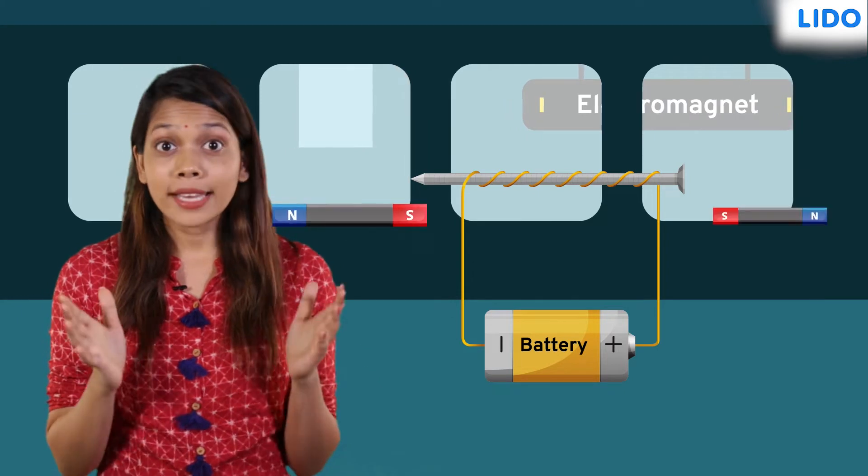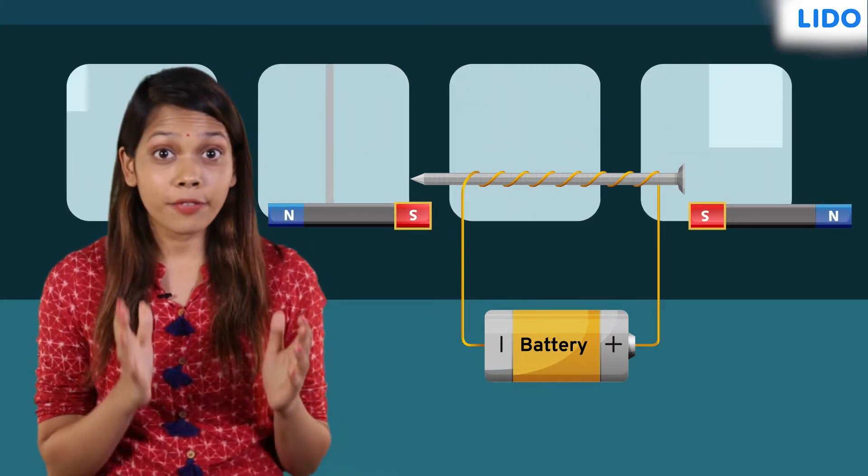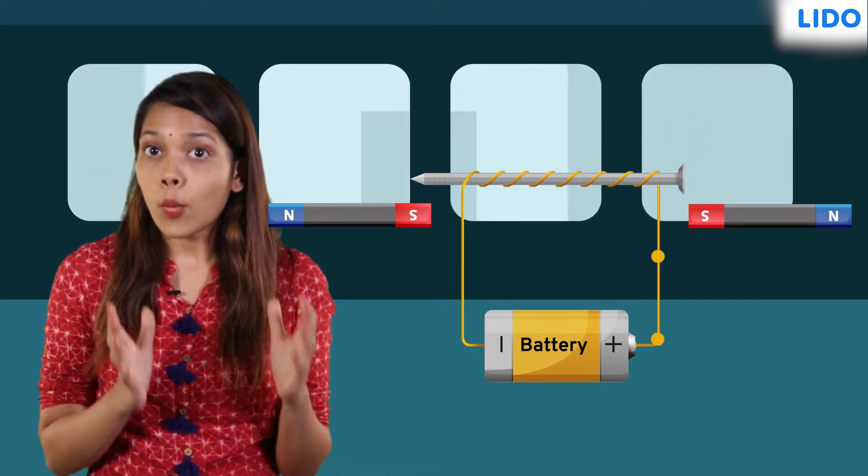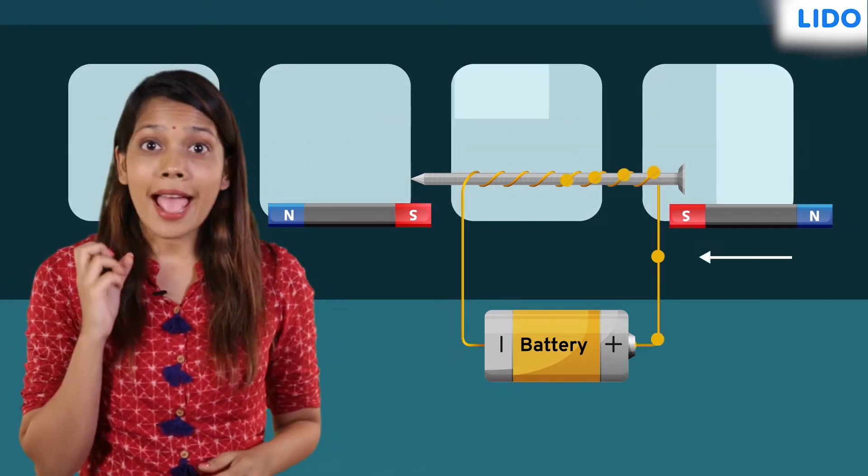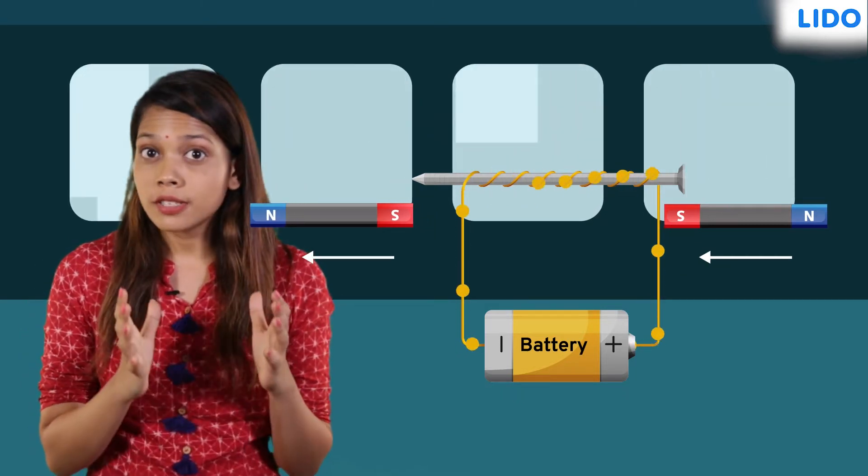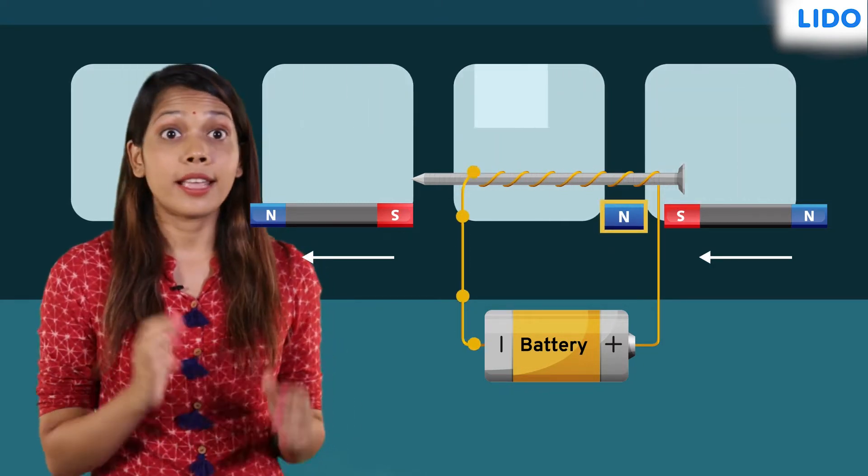We'll keep one magnet on each side of the coil, with the south pole of both magnets facing towards the coil. As the current flows, one magnet is attracted and the other magnet is repelled. The end where the attraction is observed is the north pole of the electromagnet and the other is the south pole.